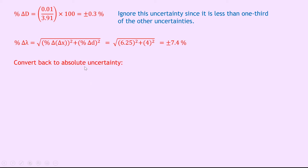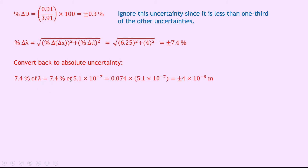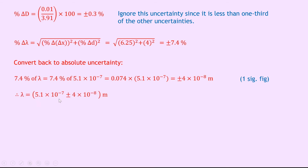We have our percentage uncertainty but we need to convert back to an absolute uncertainty. We take 7.4% of the wavelength: 0.074 times 5.1 times 10 to the minus 7, which gives plus or minus 4 times 10 to the minus 8 metres to one significant figure. Writing this in absolute form, the wavelength equals 5.1 times 10 to the minus 7 plus or minus 4 times 10 to the minus 8 metres.